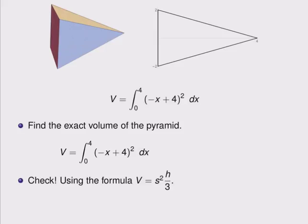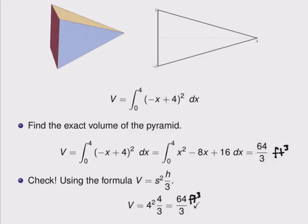I noticed that this is a polynomial, so I'm going to expand it out, because I know how to evaluate polynomials without having to use any other techniques. A substitution would also work if you want to. When I evaluate this, I get 64 thirds cubic feet is the volume of the pyramid.